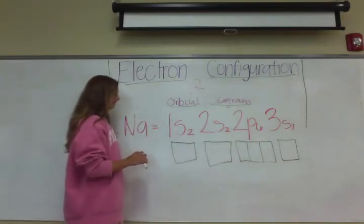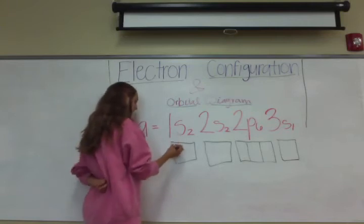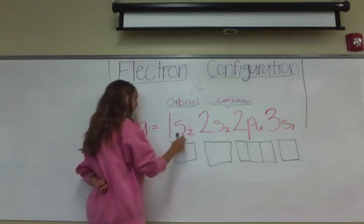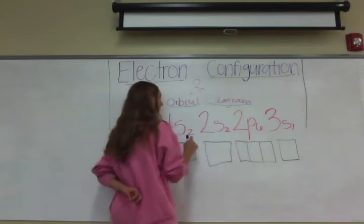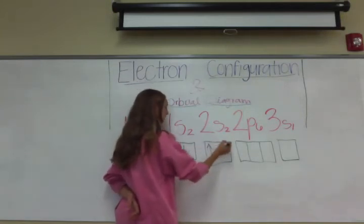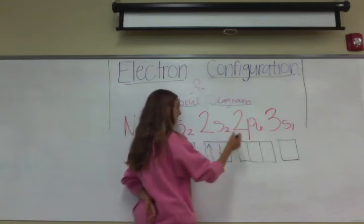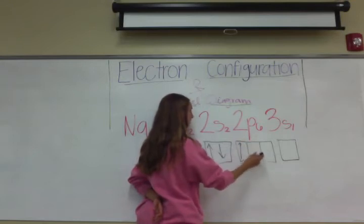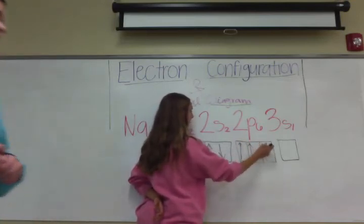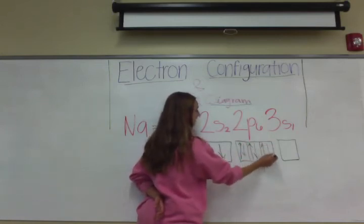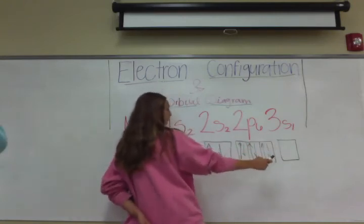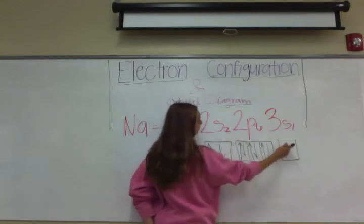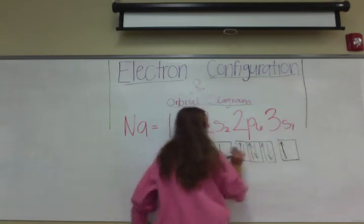You start off with all the up arrows first. For 1s² you would go up and down because you have two electrons. For 2s² you would go up and then down. For the p, go up, up, up, then down, down, down — that fills all the boxes up to six. For 3s¹ you would only do the first up arrow, because it does not have a second electron to fill the whole box.